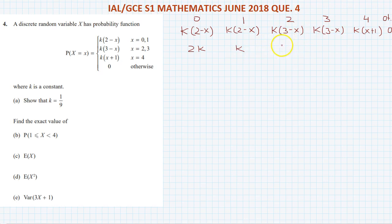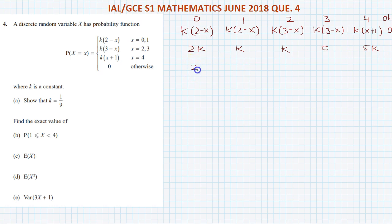At X = 3, P(X) = K(3 minus 3) which is 0. At X = 4, P(X) = K(4 minus 1) which is 5K. Adding all values: 2K plus K plus K plus 0 plus 5K equals 1.